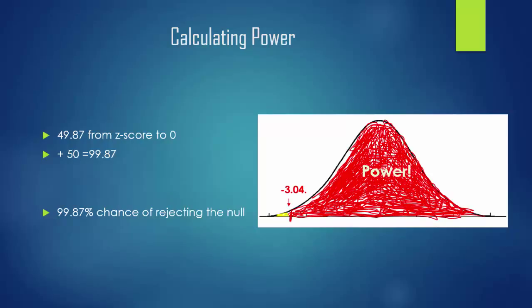You can also move it in the other direction, into p less than 0.01. It gives you less power, but you also reduce the likelihood of a type 1 error. Most scientists, however, just like to keep it at the regular p less than 0.05.